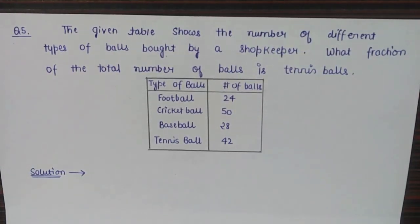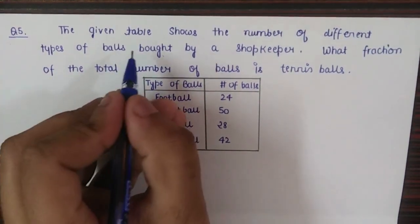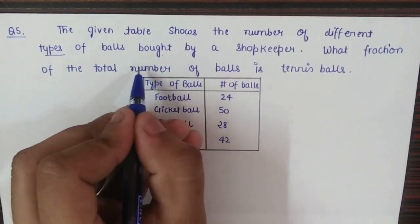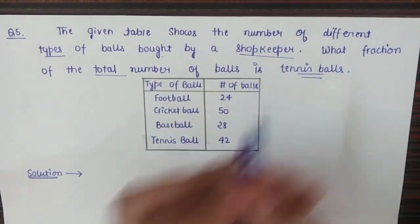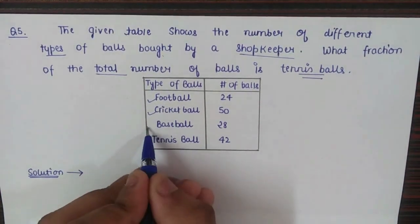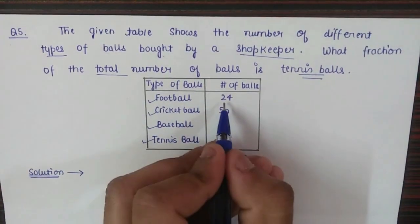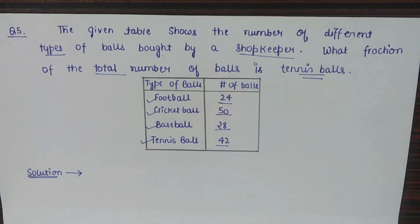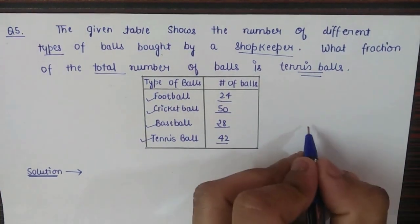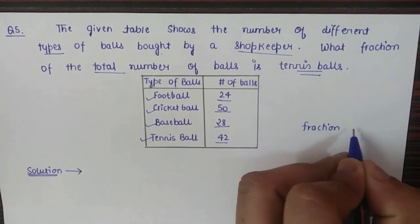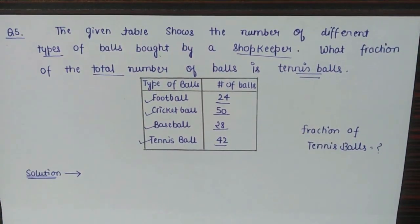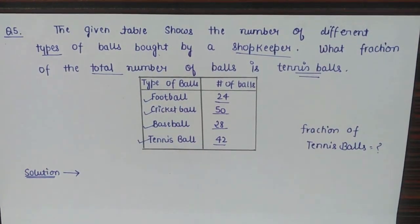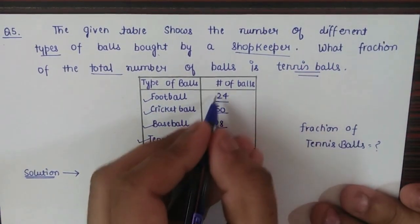Now for the final question. A given table shows the number of different types of balls bought by a shopkeeper — football, cricket ball, baseball, and tennis ball — with their quantities listed. We are asked to calculate what fraction of the total number of balls are tennis balls.